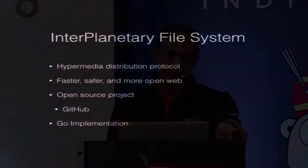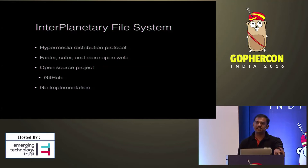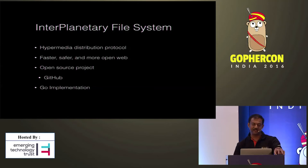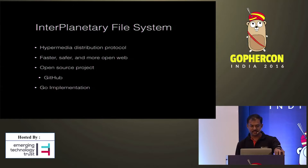IPFS is an abbreviation for InterPlanetary File System. The idea is one day we will use this protocol to communicate between planets — that is the idea behind this name. It is a new hypermedia distribution protocol aimed to make the web faster, safer, and more open. It is a fully open source project hosted on GitHub, and everything about the project is available including the roadmap and spec.